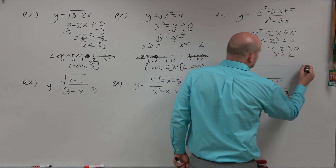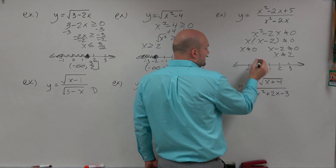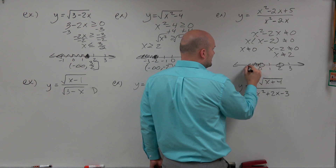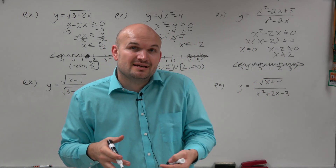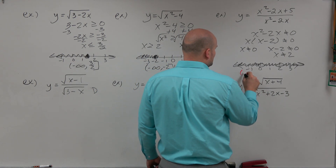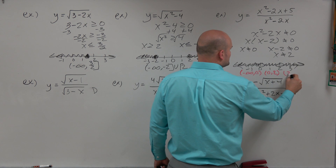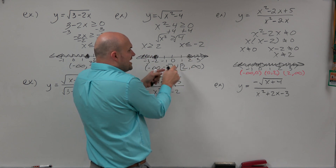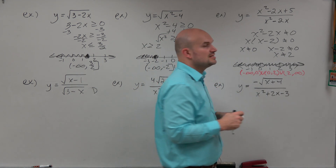Looking at the number line: 0, 1, 2, 3, negative 1. It can't equal 0, so that's an open circle, and it can't equal 2, which is another open circle. Everything else works — all the way to negative infinity, between 0 and 2, and from 2 to infinity. The only two numbers not in this domain are 0 and 2. So the domain is negative infinity to 0, union 0 to 2, union 2 to infinity. Notice I'm using parentheses here — not brackets — because 0 and 2 are not included, and I use union symbols to connect them.